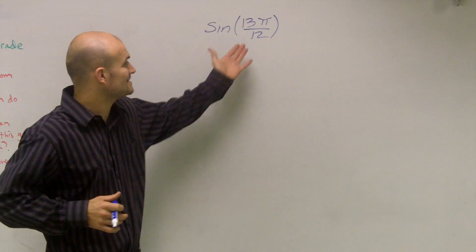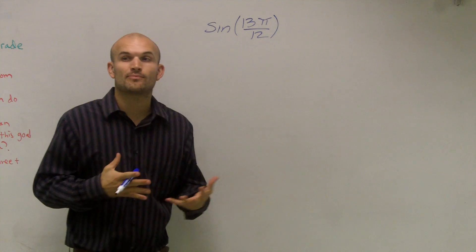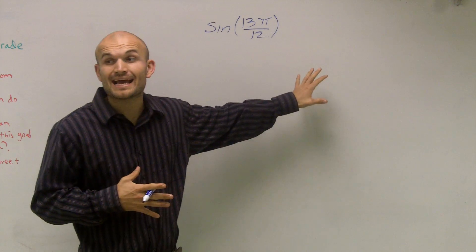And what I want to do, if I notice, since my denominator is 12, on the unit circle I don't really have any of my coordinate points that I can use to be able to find the value of this angle.